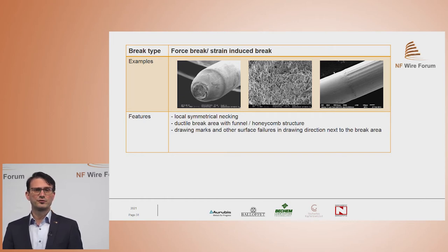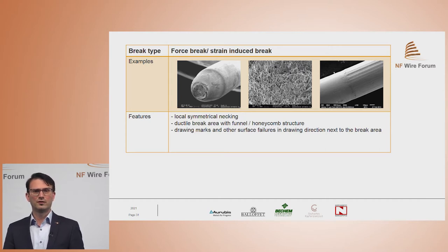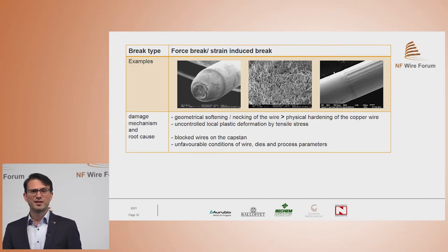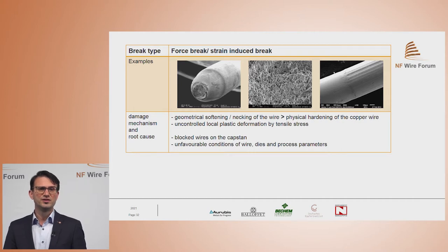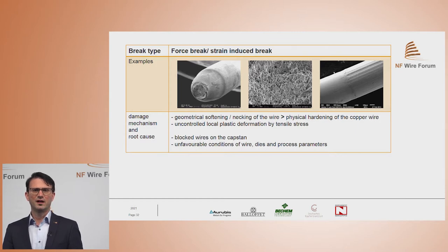The force break, or strain-induced break, shows a local symmetrical necking of the material and a ductile break area with funnel or so-called honeycomb structure. You normally see drawing marks or other surface failures in the drawing direction. The damage mechanism and possible root causes are geometrical softening — where the necking of the wire is greater than the physical hardening of the copper — and uncontrolled local plastic deformation by tensile stress. Root causes can be blocked wires on the capstan or generally unfavorable conditions of wire, dies, and process parameters.